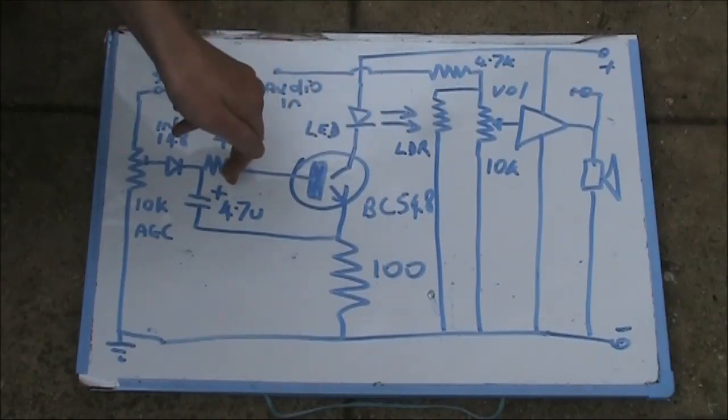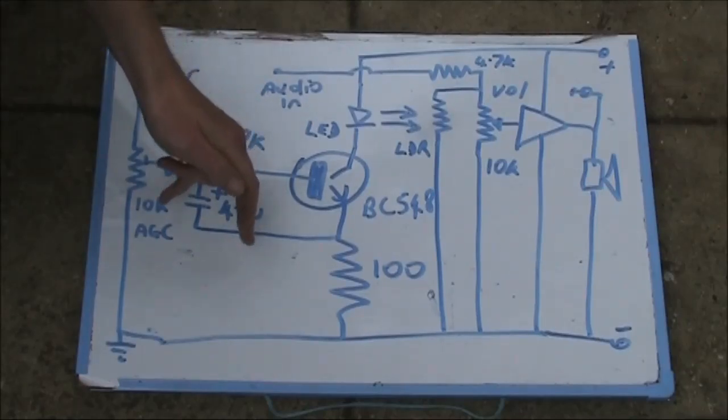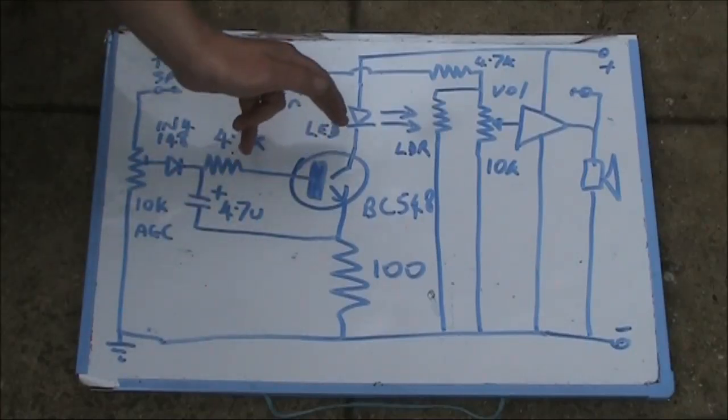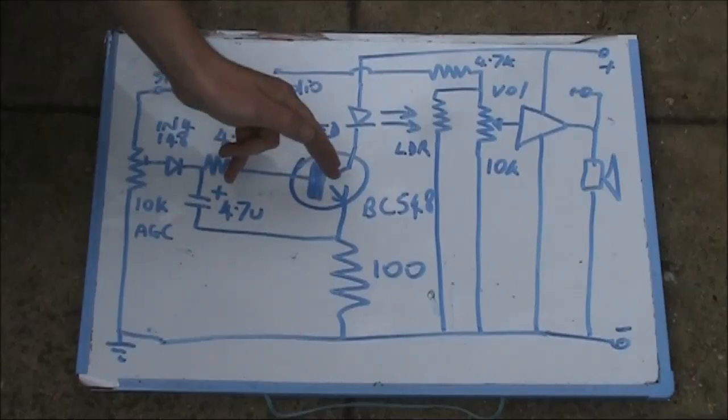The 4.7 microfarad capacitor here provides a degree of delay. I found when I connected its negative terminal to Earth, it provided some popping on loud signals. Connecting it to the emitter relieved that.